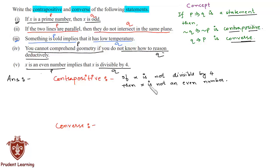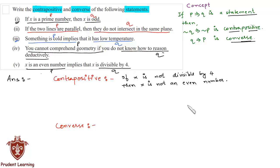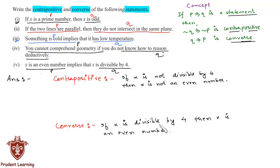The converse of the fifth statement is: if x is divisible by 4, then x is an even number. This completes our solution as well as the entire question.